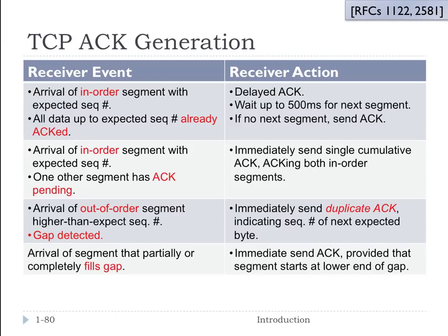This table explains how acknowledgements are generated at the receiver. It has events in the left column and the corresponding receiver actions in the right column. The events cover segments arriving in order or out of order, whether packets are expected, whether ACKs are pending, and whether there are gaps or not. Reading through it, TCP's behavior in all these different scenarios makes sense, though it is a little complex.